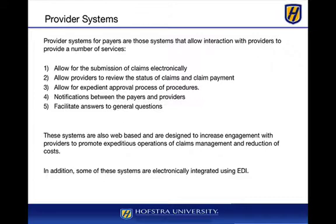Provider systems allow for electronic submission of claims, review of claim status and payment, and an expedient approval process for procedures. Using a portal, providers can determine whether a patient is eligible to receive services. These systems are also used for notifications between payers and providers, often via EDI — electronic data interchange documents such as 277 and 278 eligibility transactions that enable system-to-system integration. Websites also facilitate answers to general questions about payment schedules or benefits, designed to increase provider engagement and promote expeditious claims management.